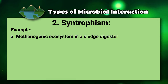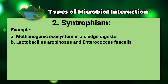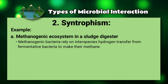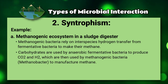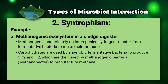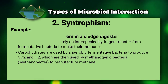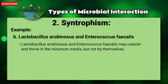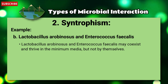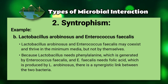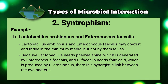Two examples of syntrophism: first, the methanogenic ecosystem in a sludge digester. Methanogenic bacteria rely on interspecies hydrogen transfer from fermentative bacteria to make methane. Carbohydrates are used by anaerobic fermentative bacteria to produce CO₂ and H₂, which are then used by methanogenic bacteria (Methanobacter) to manufacture methane. Second, Lactobacillus arabinosus and Enterococcus faecalis can coexist in minimal media — Lactobacillus needs phenylalanine generated by Enterococcus faecalis, and Enterococcus faecalis needs folic acid produced by Lactobacillus arabinosus.